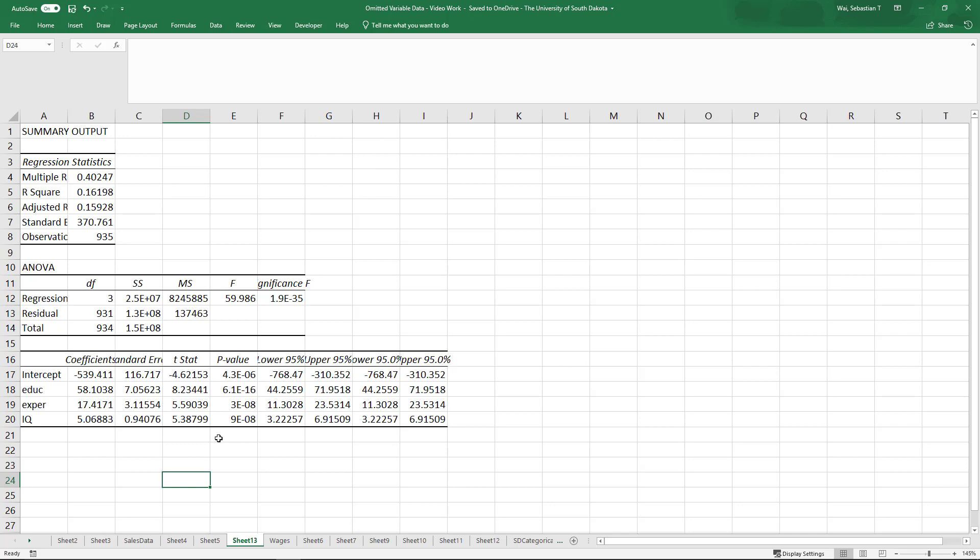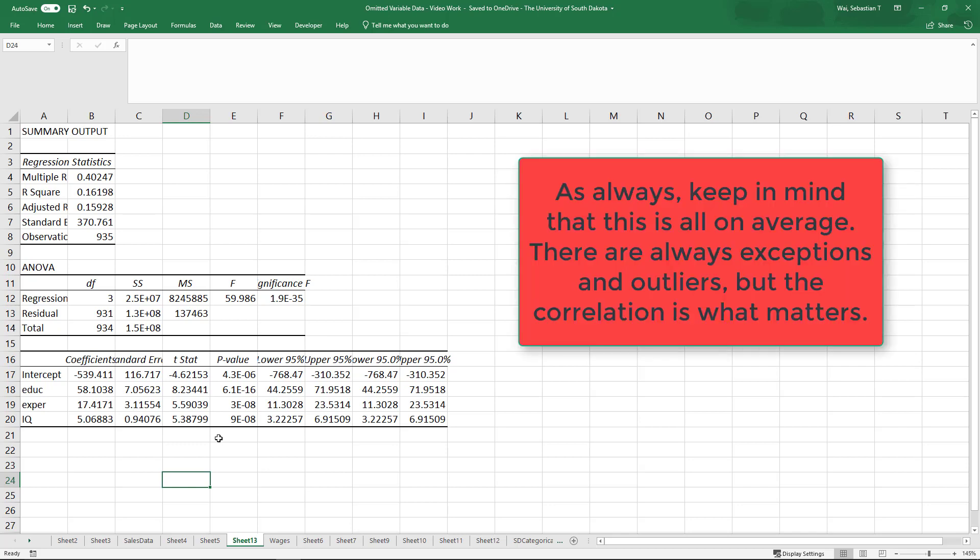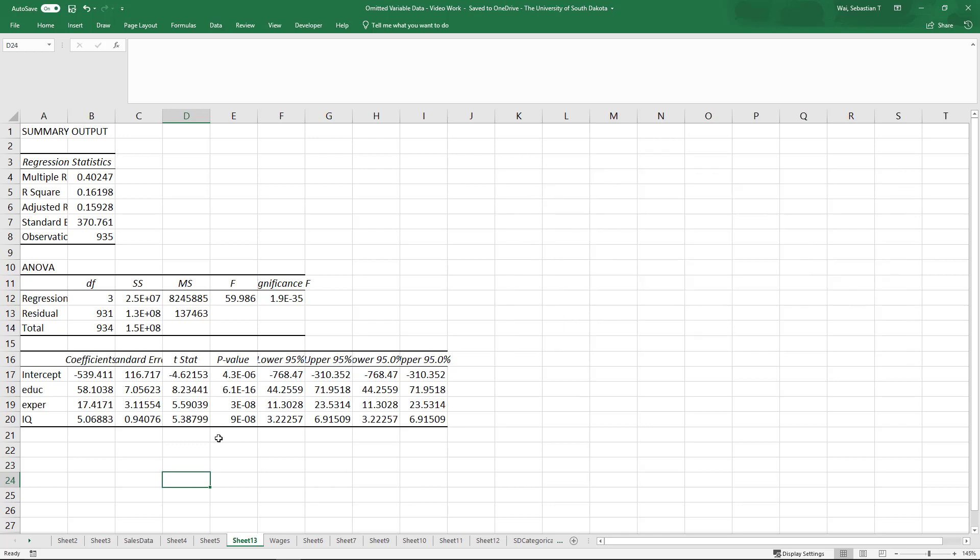Why does this happen? Well, remember that IQ is positively correlated with education. People with a higher measured intelligence are going to generally be more successful in education, but they're also going to be better at their jobs. So a positive times a positive would be a positive bias. By not including ability, now proxied for by IQ, we overestimated the effect of education. Since the educated people were smarter, it made it look like being educated was more valuable than it really is.